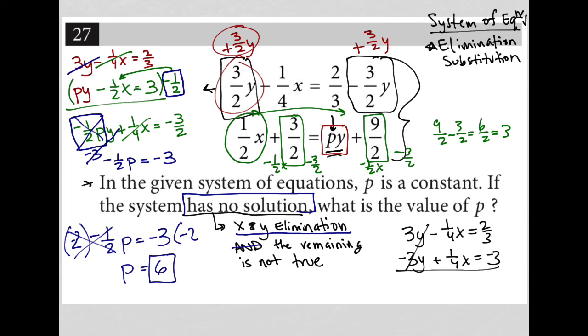And that's why this will cross out, this will cross out. I'd have zero equals whatever this is. Whatever that is, is not right, it's not equal to zero. So that's the part where the remaining is not true. If this said zero equals zero, we'd have a problem. That would be a system with infinitely many solutions. But in this case, we have zero does not equal two thirds minus three. So the correct answer is six.